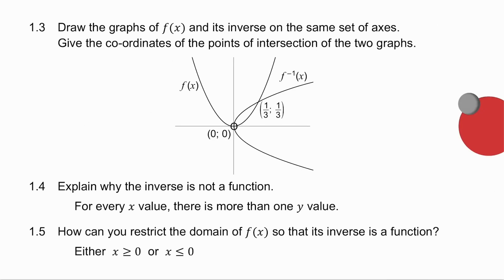In 1.3, you're asked to draw the two graphs and give the coordinates of the points of intersection. There are the two graphs. 0, 0 is the intercepts of both of them and a point of intersection. And one-third, one-third is the other point of intersection.